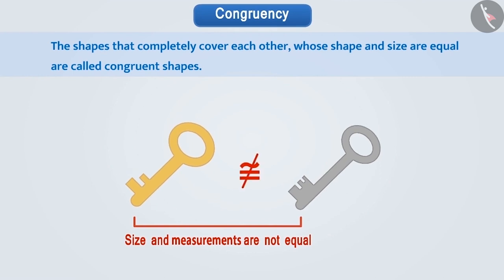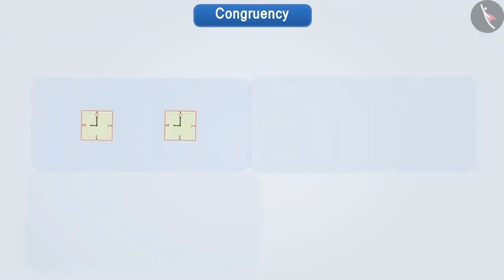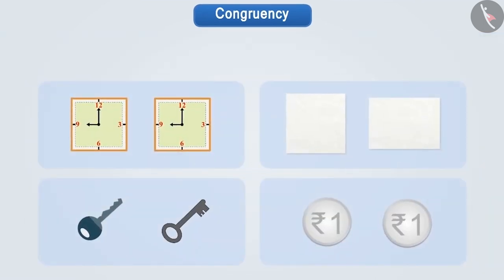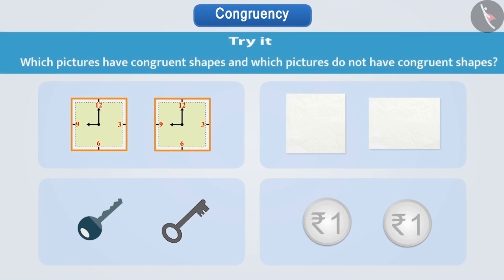We use this symbol to show that the two figures are not congruent. Now by looking at the pictures given, find out which pictures show congruent shapes and which pictures do not have congruent shapes. Pause the video and solve it yourself.